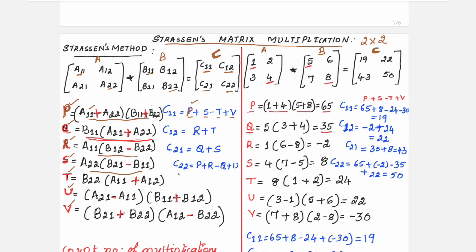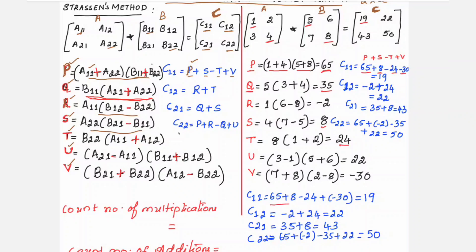Now let us finish the computations for C11. C11 = P + S − T + V. Substituting: P = 65, S = 8, T = 24, V = −30. So C11 = 65 + 8 − 24 − 30 = 19. The variables P, S, T, V come from the corresponding Strassen's formulas and are identified from the intermediate variable list.